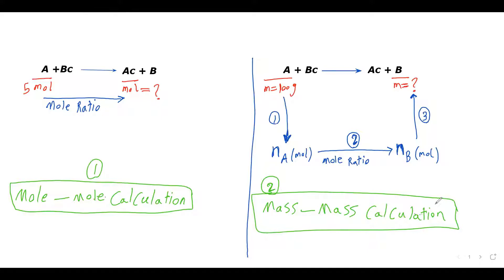We have two types of problems in stoichiometry. The first type is mole-mole calculation, and the second type is mass-mass calculation. In the first type, we get a chemical reaction and are given the number of moles for one of the reactants, and asked to find the number of moles for one of the products or vice versa. The only thing we need to do is look at the balanced chemical reaction, find the mole ratio, and use that to solve the problem.